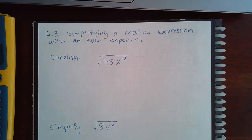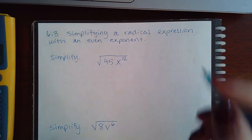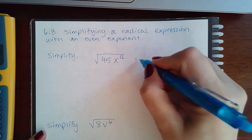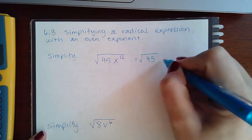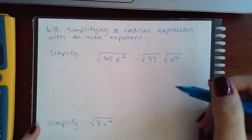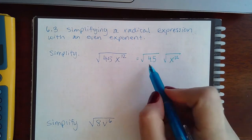Okay, so now we're introducing some variables into the problem. What we have here is 45 and then square root of x to the 12th. The first thing you can do is separate that into the square root of 45 and the square root of x to the 12th.